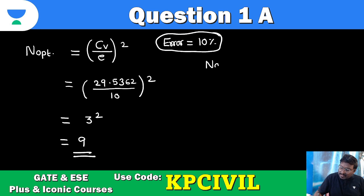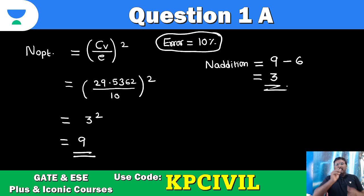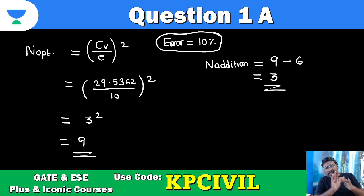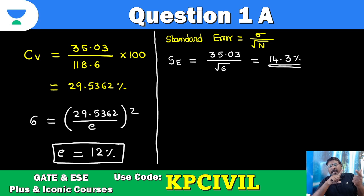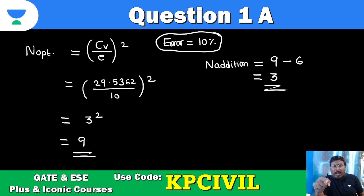Additional stations required: N_additional = N_optimum minus N_existing = 9 − 6 = 3 additional rain gauge stations required. In conclusion: as per engineering mathematics, standard error is 14.3%; as per hydrologic procedure, standard error is 12%; optimum stations = 9; and 3 additional stations are required.